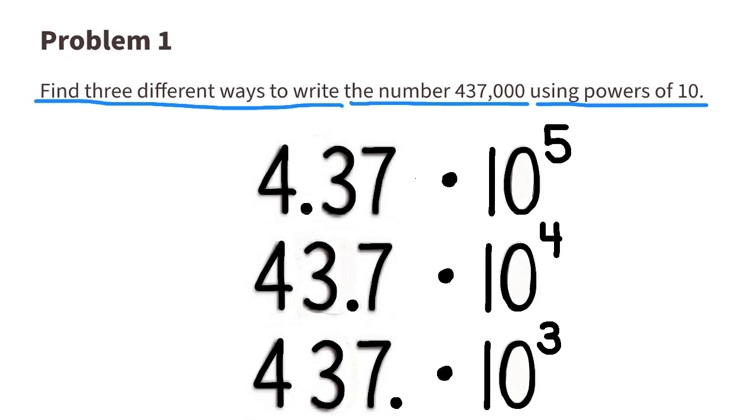These are the three different ways that I would write the number 437,000 using powers of 10. However, you could use any of the five expressions that I showed you.